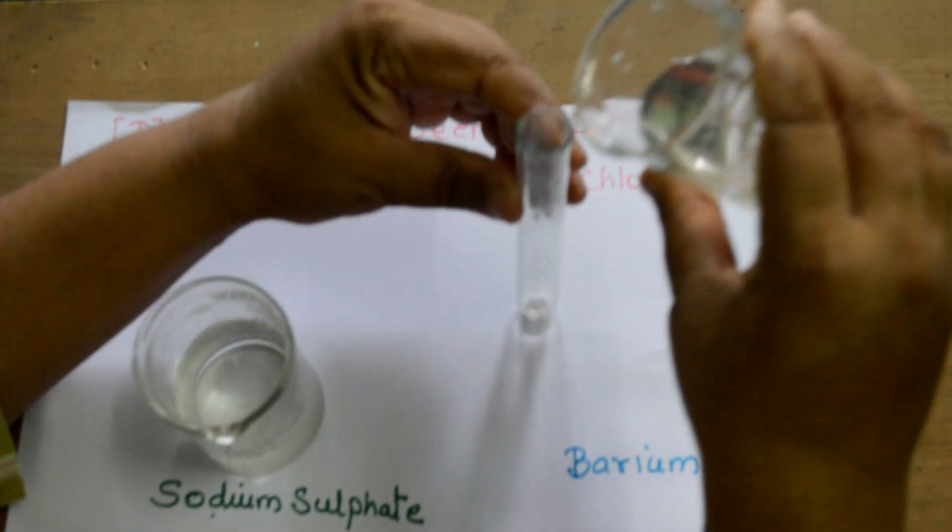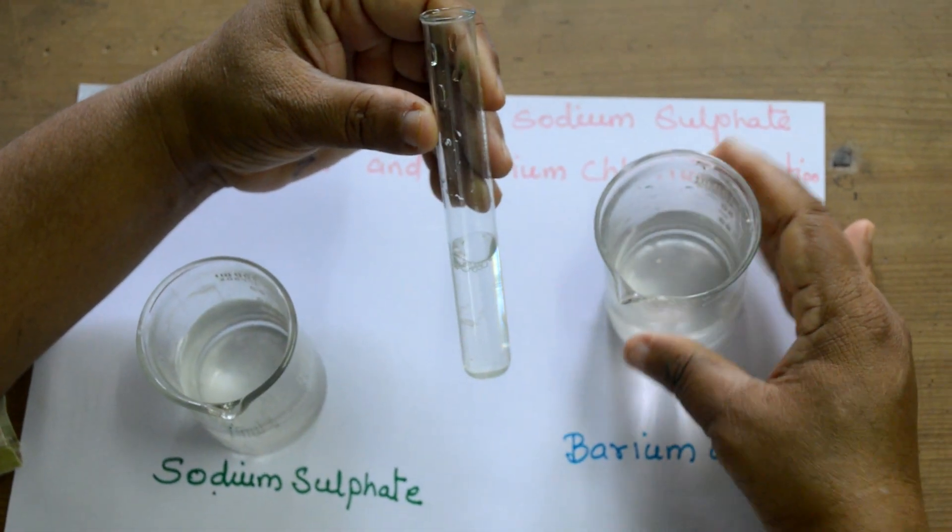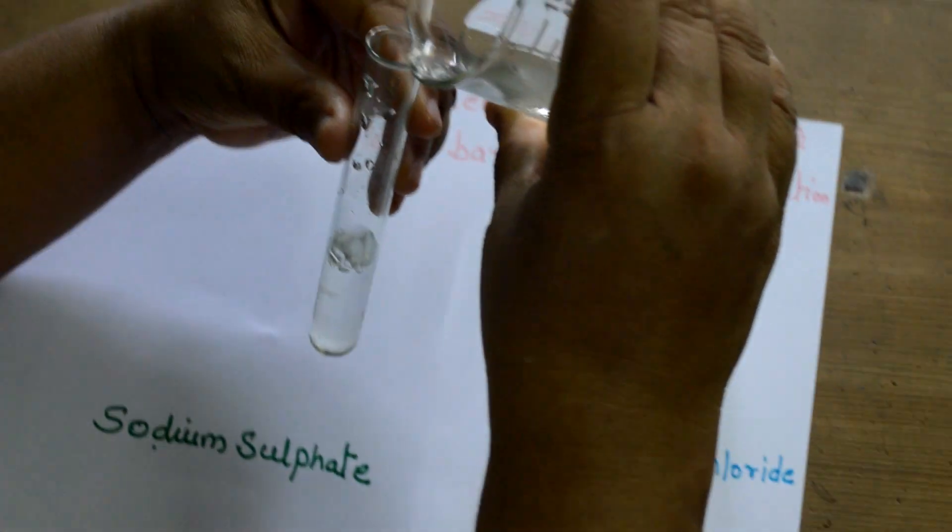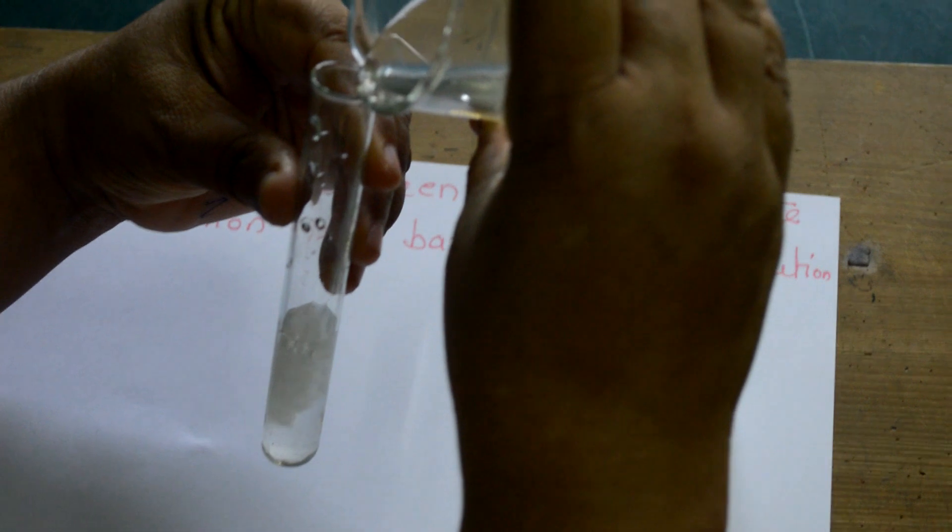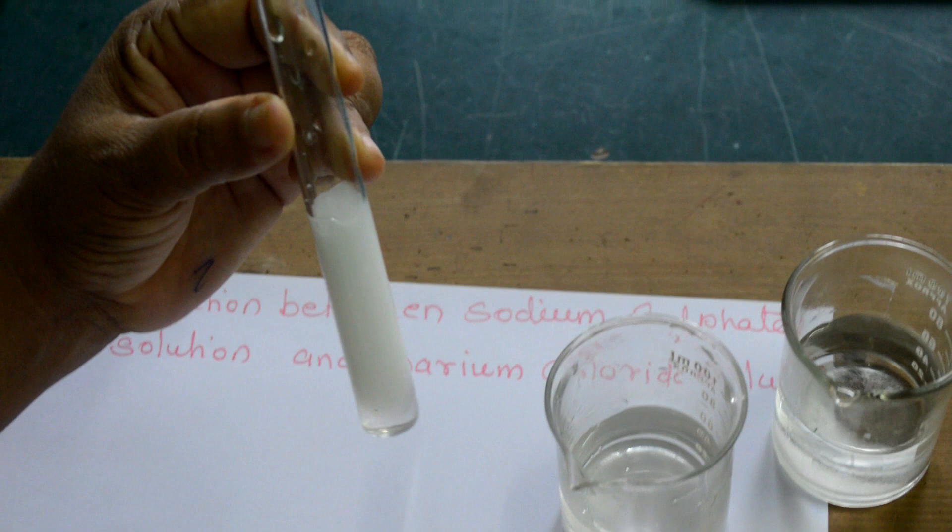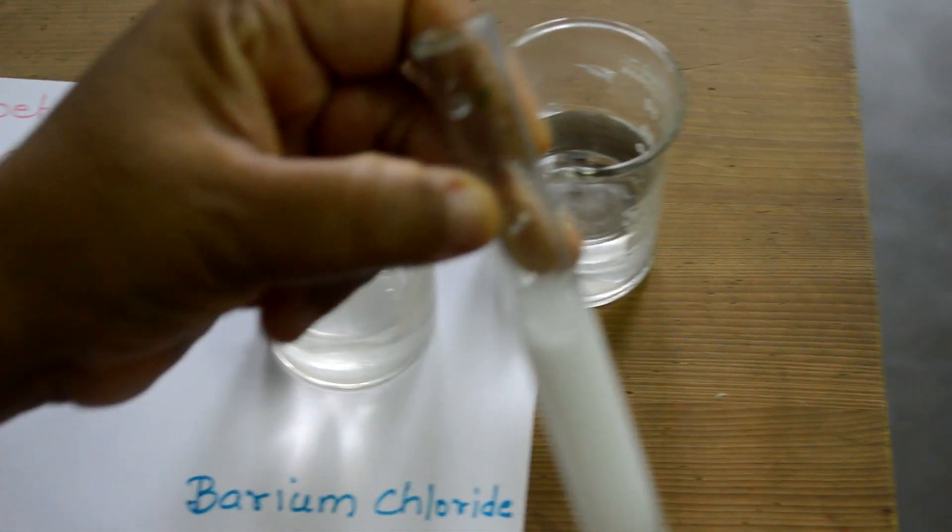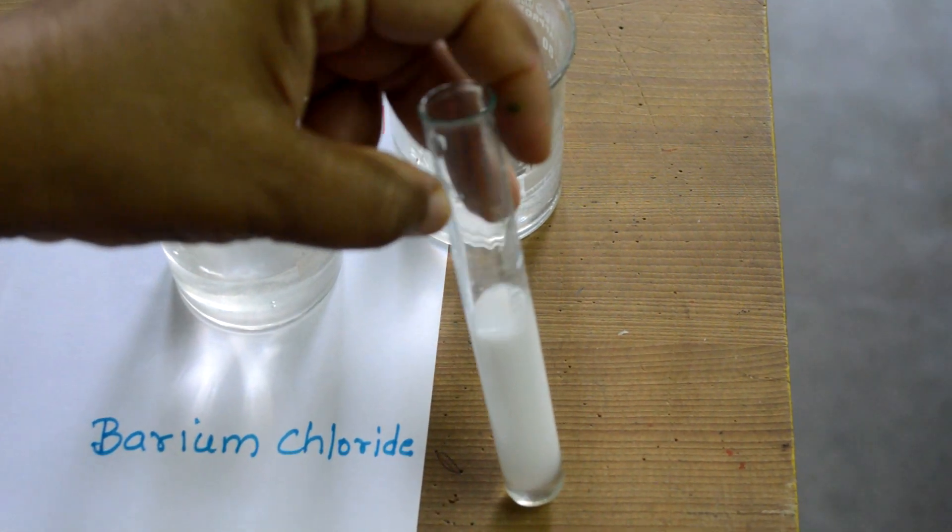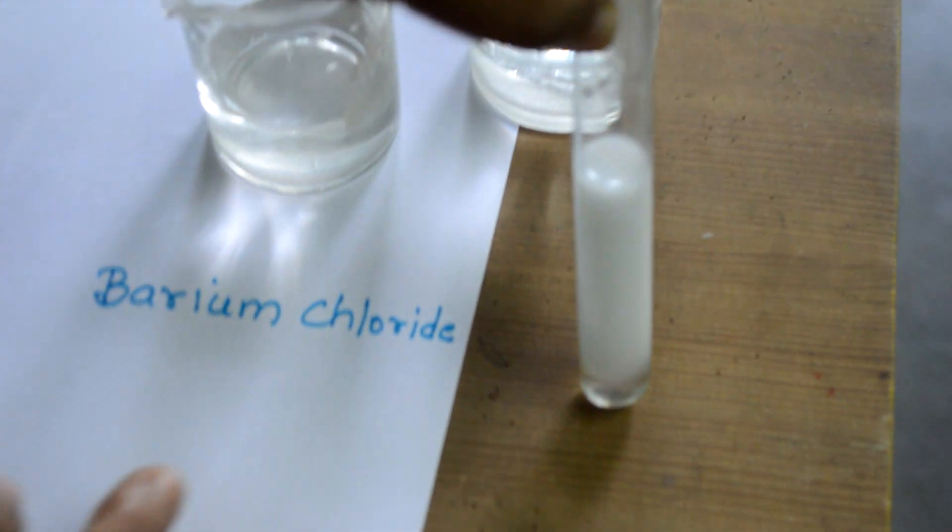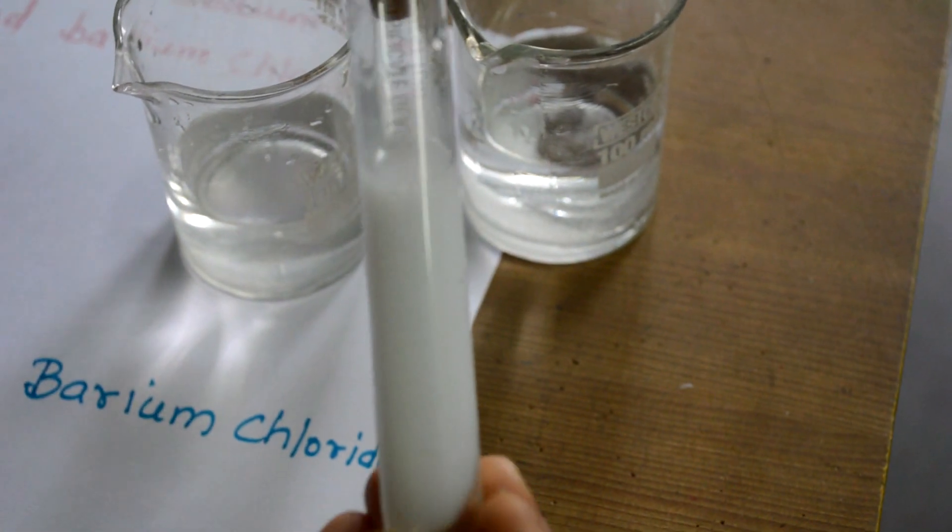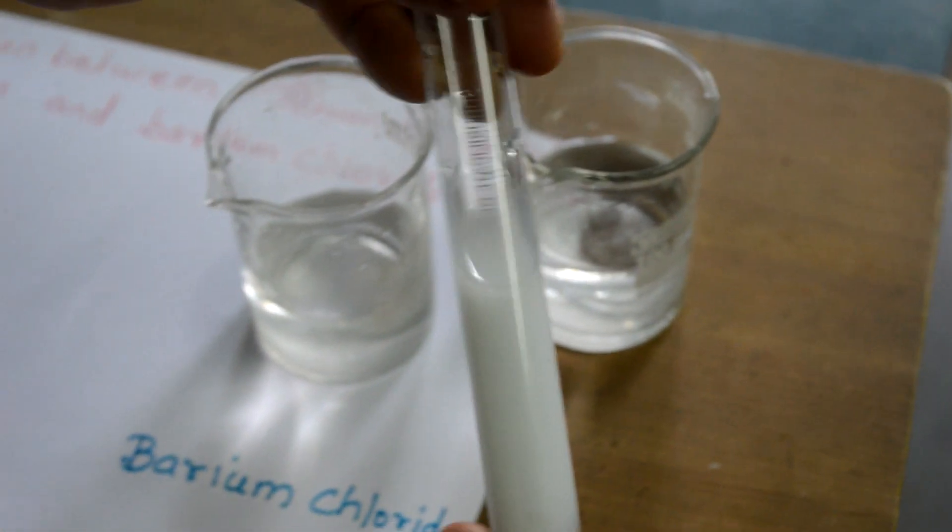Take 5 to 10 ml of barium chloride in a clean test tube and pour equal amount of sodium sulphate. See, immediately you can see the change. The solution has turned white. White precipitation has formed in the mixture.